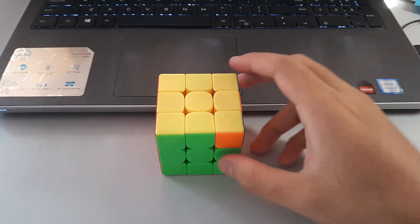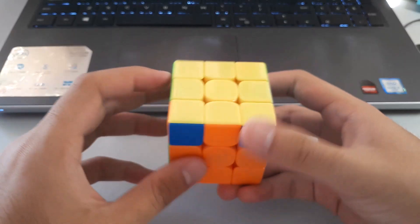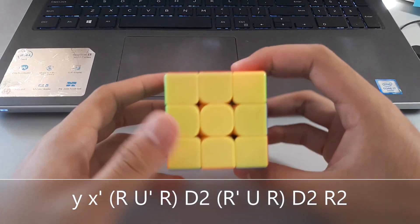And finally, for the AB perm, we can hold the 2x2 block at the back left and do this algorithm by rotating up.